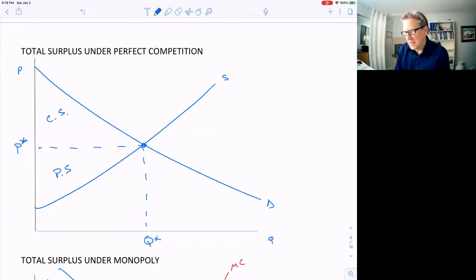But what about under monopoly? Is total surplus maximized under monopoly? Now we know it's maximized here in perfect competition because anyone that buys this product values it more than the marginal cost of producing it. But that's not true in monopoly.